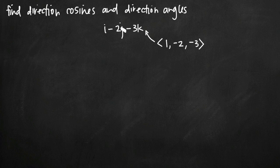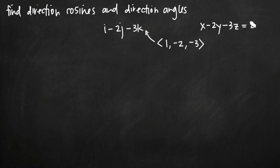Keep in mind you can do the same thing if instead of i, j, and k you have x, y, and z. For example, if we had something like x minus 2y minus 3z equal to 8, we could take this and get the same direction numbers. We just take the coefficients on x, y, and z and we'd end up with 1, negative 2, and negative 3. As long as your function is in the form where x, y, and z equal some constant, you just take those coefficients to get your direction numbers.